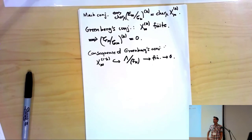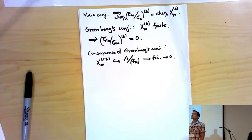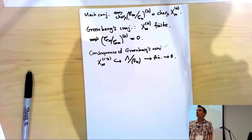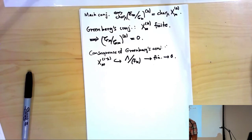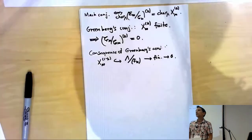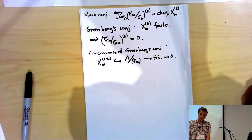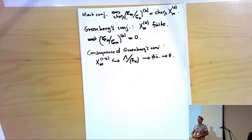Questions? One question: when you wrote Vandiver's conjecture saying A_F⁺ is zero, but A_F is zero iff A_F⁻ is zero — doesn't that make everything regular? Answer: no, A_F is zero iff A_F⁻ is zero, but that doesn't mean A_F⁺ is zero. Another question: on the last page, is that a C_∞ over C_∞? Answer: yes, that's E — E_∞.